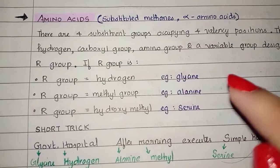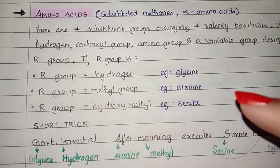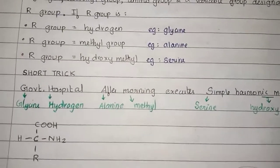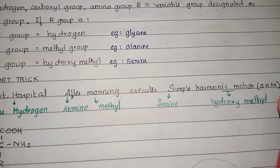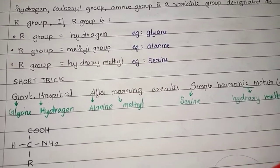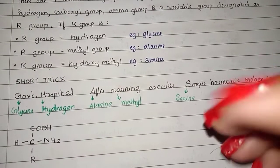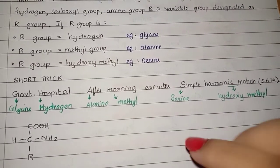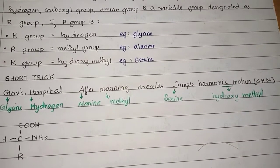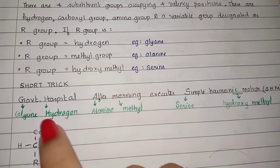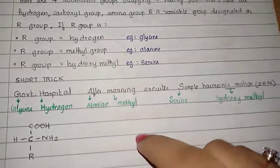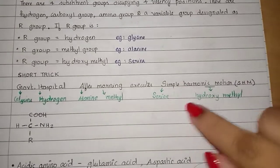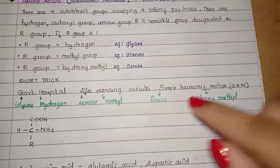For example, when the R group contains hydrogen, it is called glycine. When the R group contains methyl group, it is called alanine. And when it is hydroxide, it is serine. The short trick to learn this is: 'government hospital after morning, execute simple harmonic motion.' Government hospital — G for glycine, when hydrogen is in the R group. After morning — that is alanine, when it is a methyl group. Execute simple harmonic motion — that is serine and hydroxyl methane.